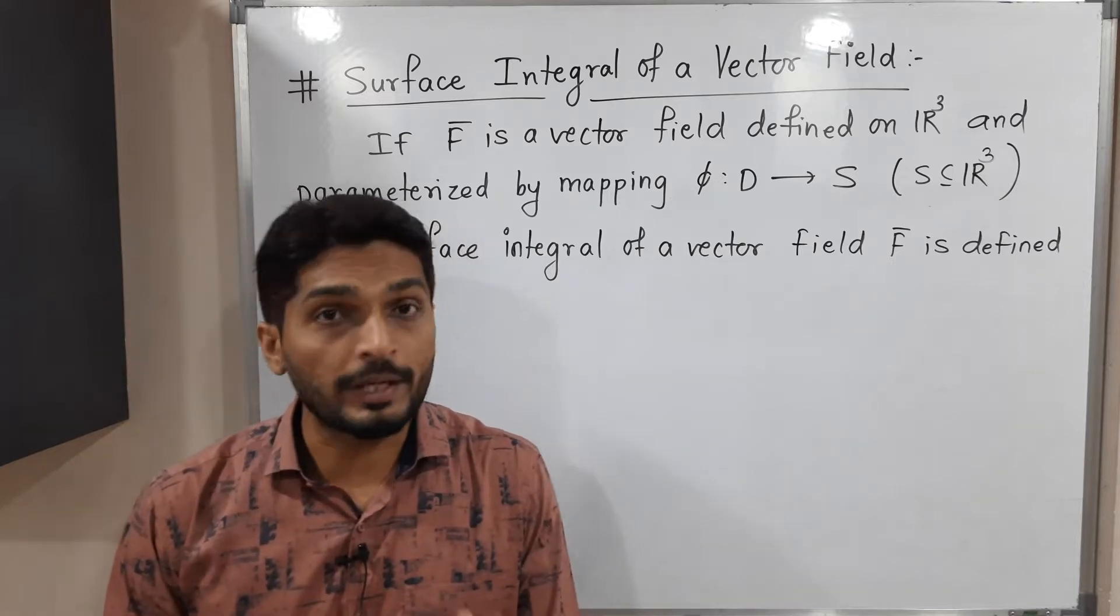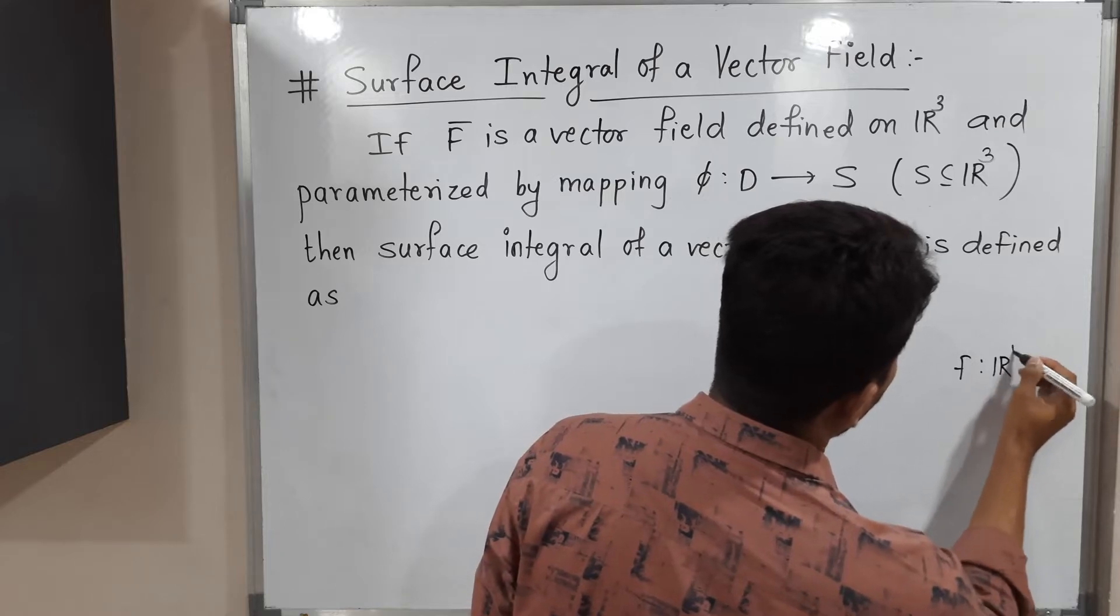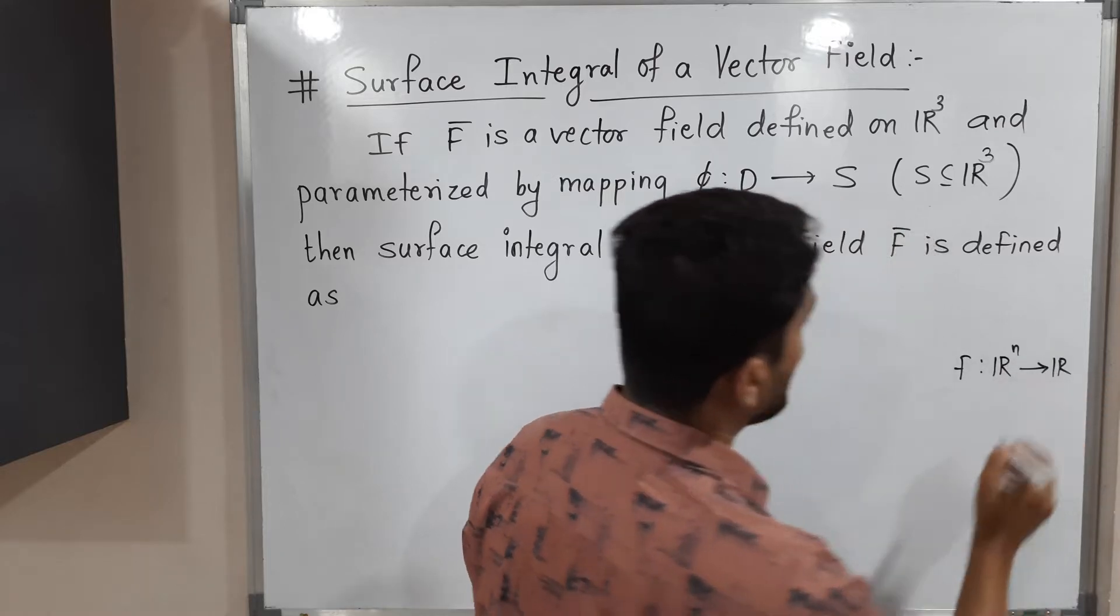Let us try to understand what is a vector field. If you have any function f from Rn to R, then we call it as a scalar field.